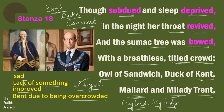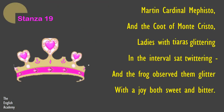Then the poet tells us some more creatures who were there to attend the concert. He says Martin, Cardinal Mephisto, and the Coot of Monte Cristo. Martin, Cardinal Mephisto, and Coot of Monte Cristo are references to historical persons.